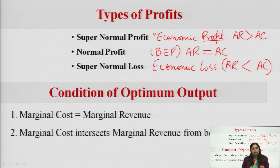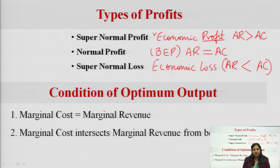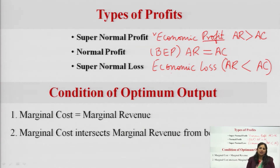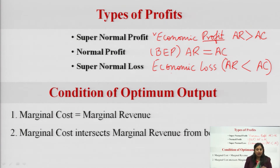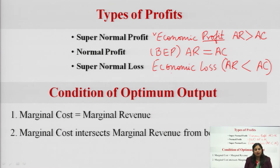Every seller in any kind of competition has a question: how to determine the level of output and price to achieve maximum profit. If there are profits, he wants to know when maximum profits are available. If he is into losses, he wants to minimize his losses. The objective of a seller is to maximize profit and minimize loss. To identify that optimum situation, there is a condition in economics called the condition of optimum output.